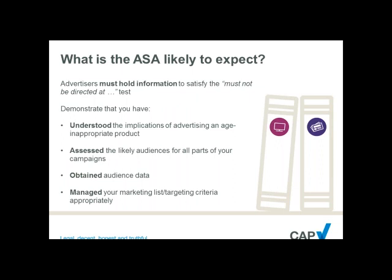The code operates on a reverse burden of proof. You are required to demonstrate to the ASA that you have satisfied the 'must not be directed at' test. Our advice on process would be firstly that you understand the basics of whether you are advertising an age-restricted product. That should be straightforward in terms of business process, but be careful — there are some advertisements featuring alcoholic products that might not be for alcoholic products but are also subject to the rules.